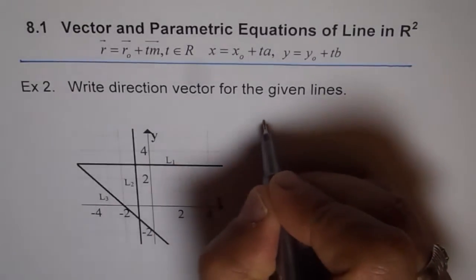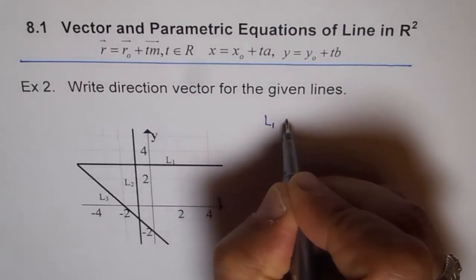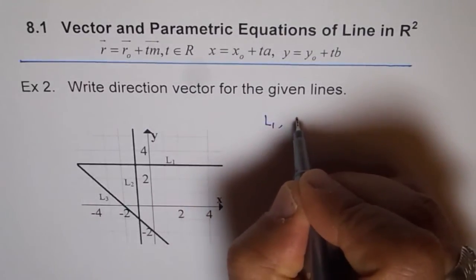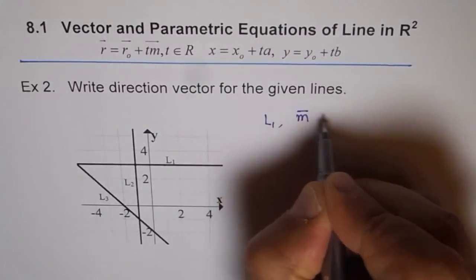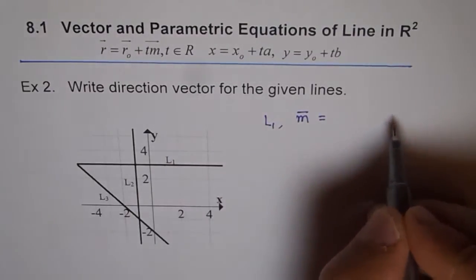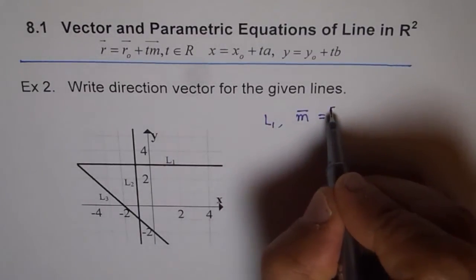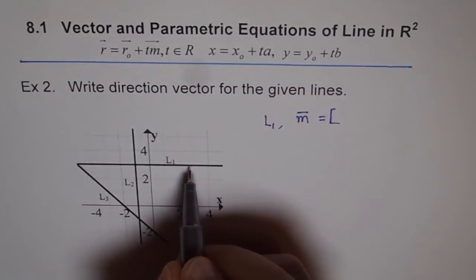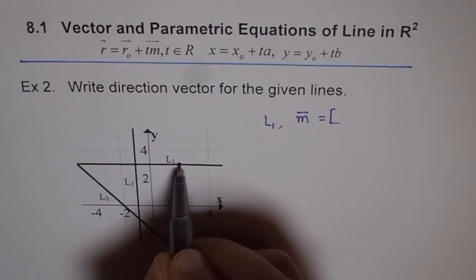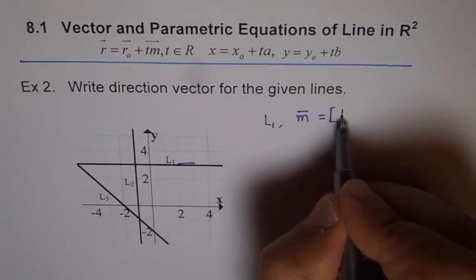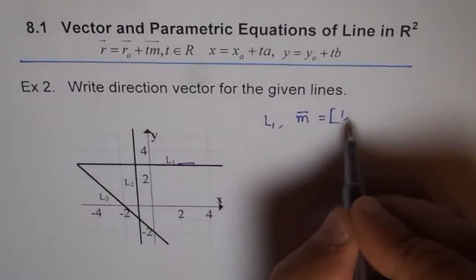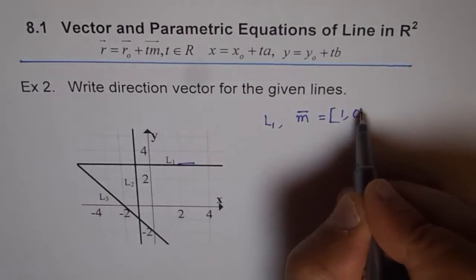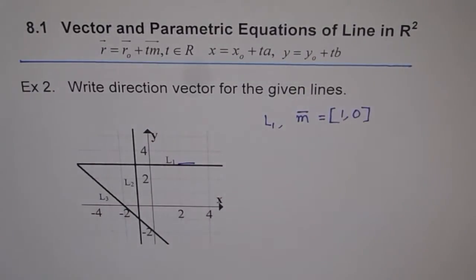Now here, L1. So line L1 has direction vector, we can write direction vector as m equals, we can use square brackets or parentheses. So let me use square brackets here. Now, how much do you move in the x value moving right? So from here, we move, let's say, 1 unit. So we say 1, comma, how much up? 0. So that is our line 1, [1, 0].